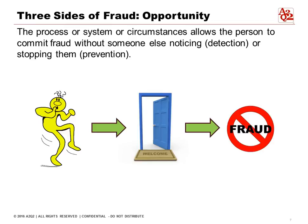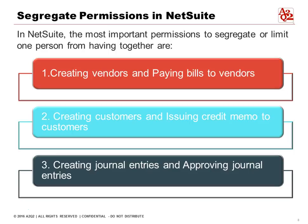The third side of the fraud triangle is opportunity — when a process, system, or circumstance allows a person to commit fraud without someone else noticing, detecting, stopping, or preventing them. In our case, we're going to focus on opportunity particularly around systems, specifically NetSuite, because that's the part we can best control.